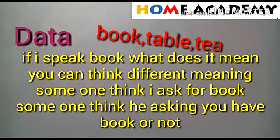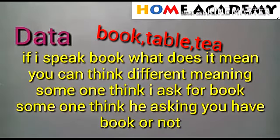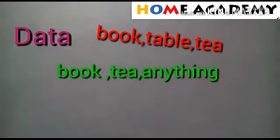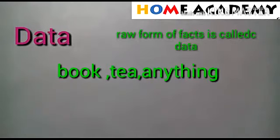Raw form of facts is called data. Here are some examples: book, table, tree. You all know book, table, and tree. I have three examples here — book, table, and tree.